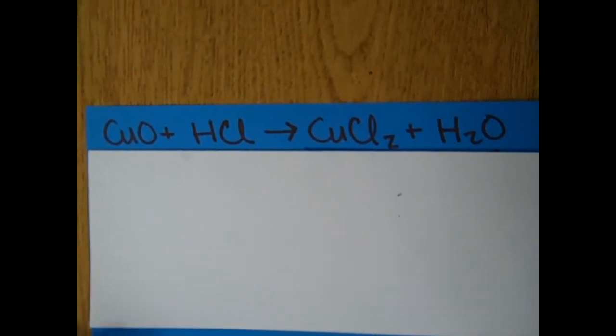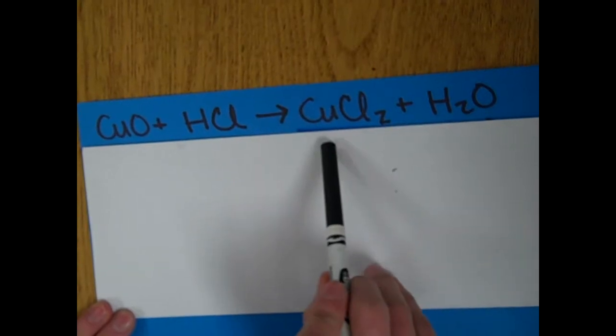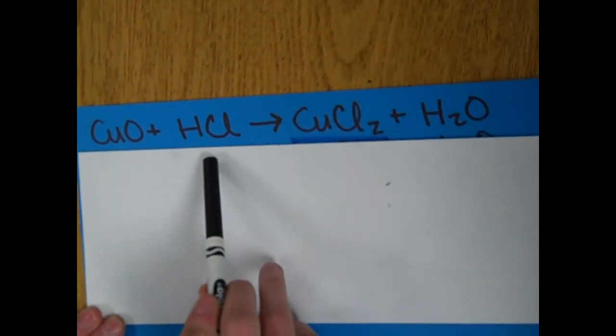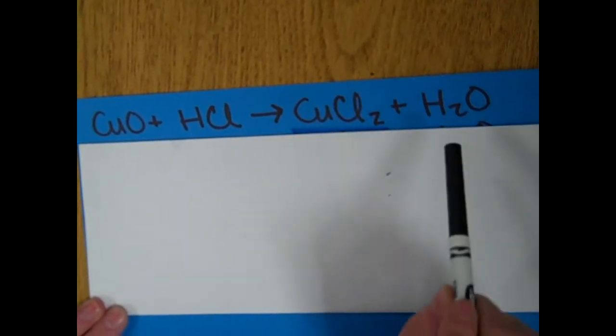The fourth conversion we will do will be converting copper oxide into copper chloride by adding hydrogen chloride, or hydrochloric acid, and then the result would be copper chloride and water.